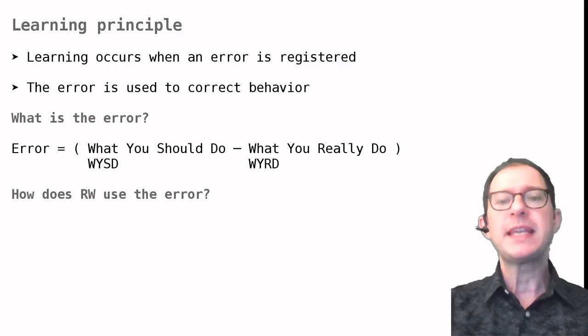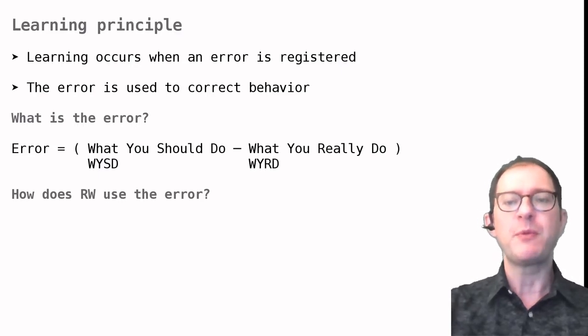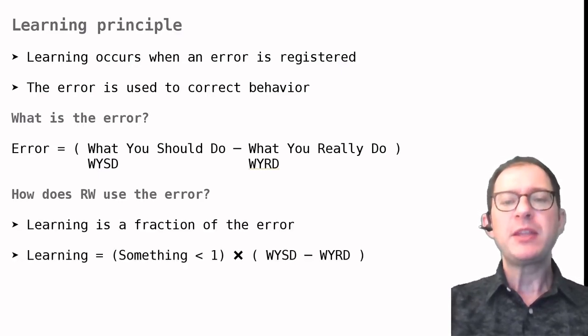So each time a CS-US experience happens, RW calculates an error, that is the difference between the WYSD and the WYRD.